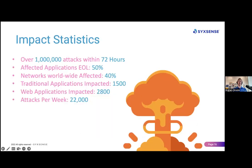These drastic measures were not taken in error. Here are some of the ridiculous impact stats for Log4Shell: over 1 million attacks, many of them being initially successful, were initiated within the first 72 hours of the disclosure. CISA reported approximately 1,500 traditional applications impacted by Log4Shell within one year, and they also reported 2,800 web-based applications also impacted during that same year. More than 50% of the affected applications were flagged as end of life, meaning that they were no longer supported by their vendors. On average, 22,000 attacks were carried out using Log4Shell on a weekly basis for the first few months. And finally, the research group Checkpoint Global found that about 40% of networks worldwide were affected in some way by Log4Shell.